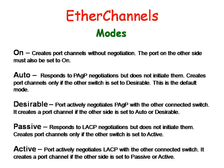EtherChannels are one way of combining several physical links between switches into one logical connection. Normally Spanning Tree blocks redundant links. EtherChannels get around that and enable load balancing across these links. Traffic is balanced between the channel links on the basis of such things as source and destination MAC addresses or IP addresses.